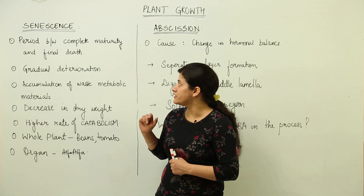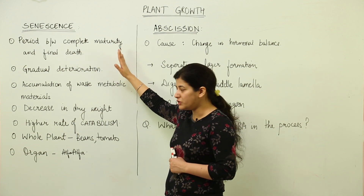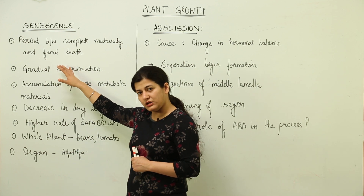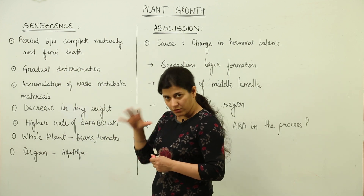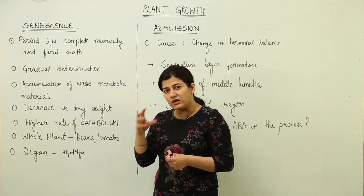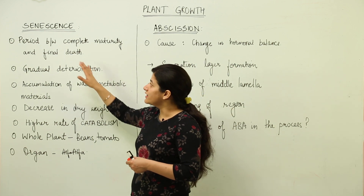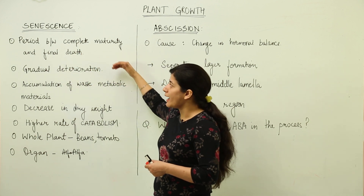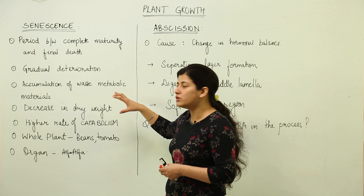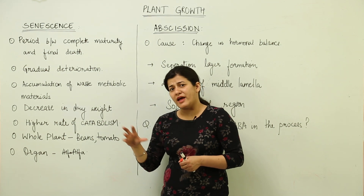Let's take senescence first. Senescence is the period between complete maturity of the plant — when it is able to reproduce — and the final death. That final death could be for a particular organ, or it could be complete organism death. Plants show senescence in leaves: there are older yellow leaves present alongside newly formed green leaves, so we observe both organ death and complete plant death. The plant has to undergo a process of deterioration from its best period of maturity to death.